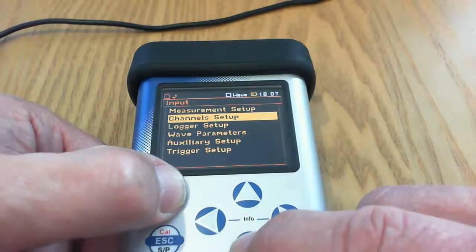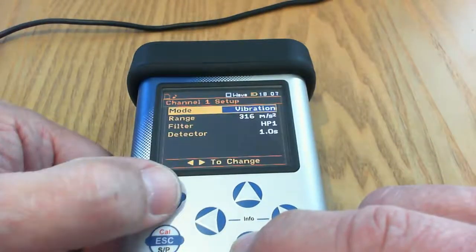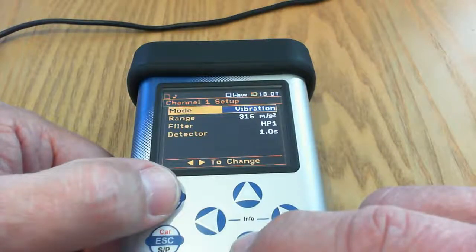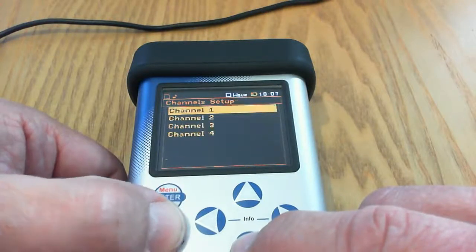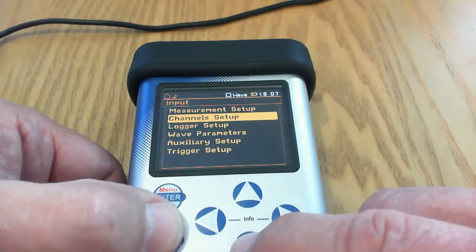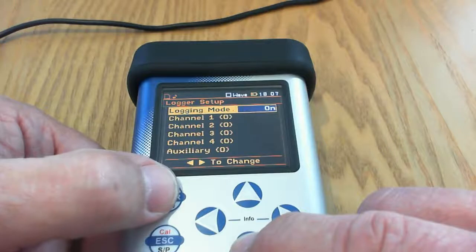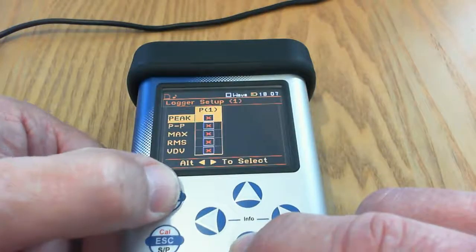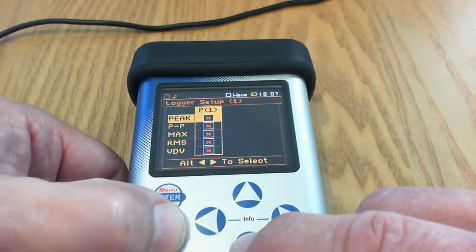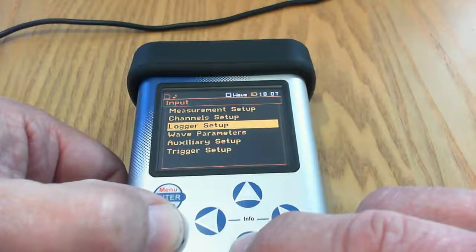If we're happy with all those settings press enter. Channel setup, as I said before, you can set this up for vibration or sound and change the range and change the filters. We'll skip over that for now. If you want to use the logger, simply make sure that it's switched on and then you can choose which parameters you want to go into the logger. But again I won't worry too much about that.